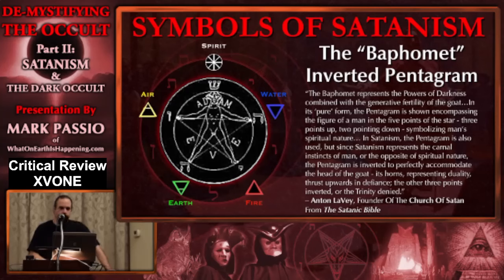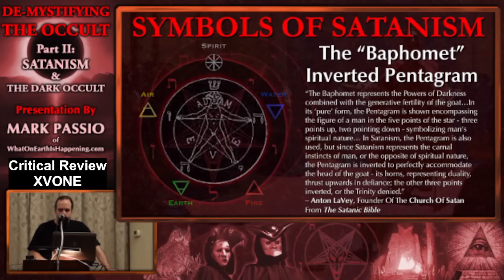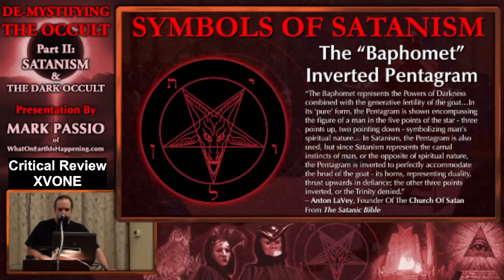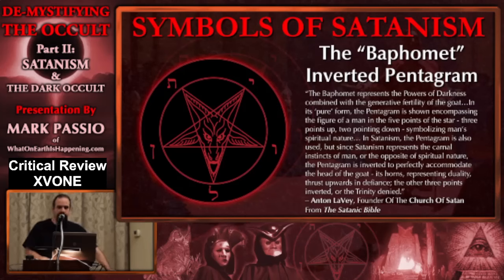Again, the four points being earth, air, water, and fire, and the top point — the head — being spirit. In Satanism, the pentagram is also used, but since Satanism represents the carnal instincts of man, or man as just another animal — the opposite of spiritual nature — the pentagram is inverted to perfectly accommodate the head of the goat. Its horns, representing duality, thrust upwards in defiance. The other three points, inverted, are the trinity denied.